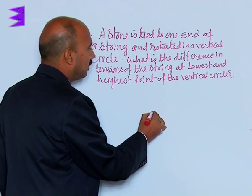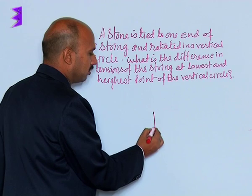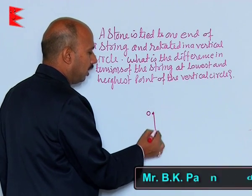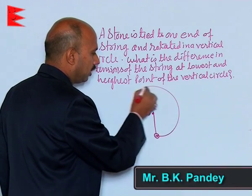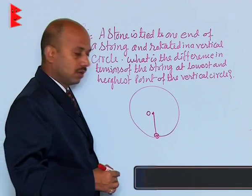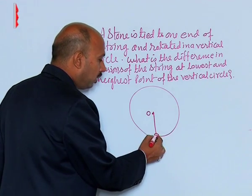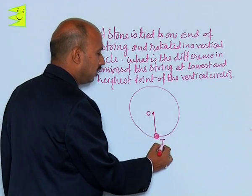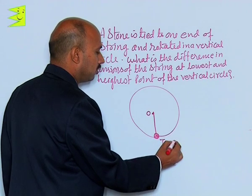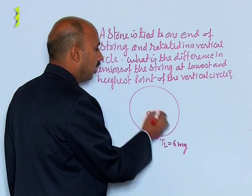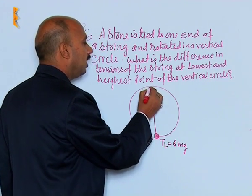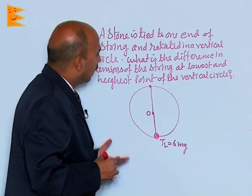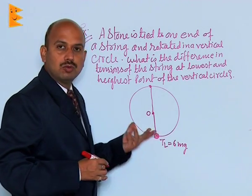Suppose you have taken a string like this and a stone is tied at this end, and now it is rotated in a vertical circle. When the body or this mass is at this end, the tension T_L is equal to 6mg, and when it is at the highest point, tension should be greater than or equal to 0.